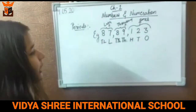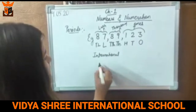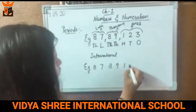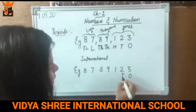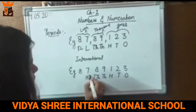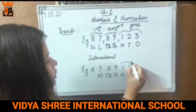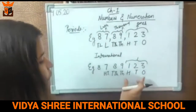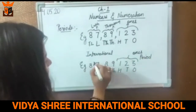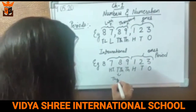Similarly, when talking about the international place value chart, the periods are grouped differently. Suppose I am taking a 7-digit number: 7, 8, 9, 8, 7, 8, 9, 1, 2, 3. In the international place value system, each period consists of 3 place values. The first period has 1s, 10s, and 100s and is called the ones period. The second period has 1,000, 10,000, and 100,000 and is called the thousands period.